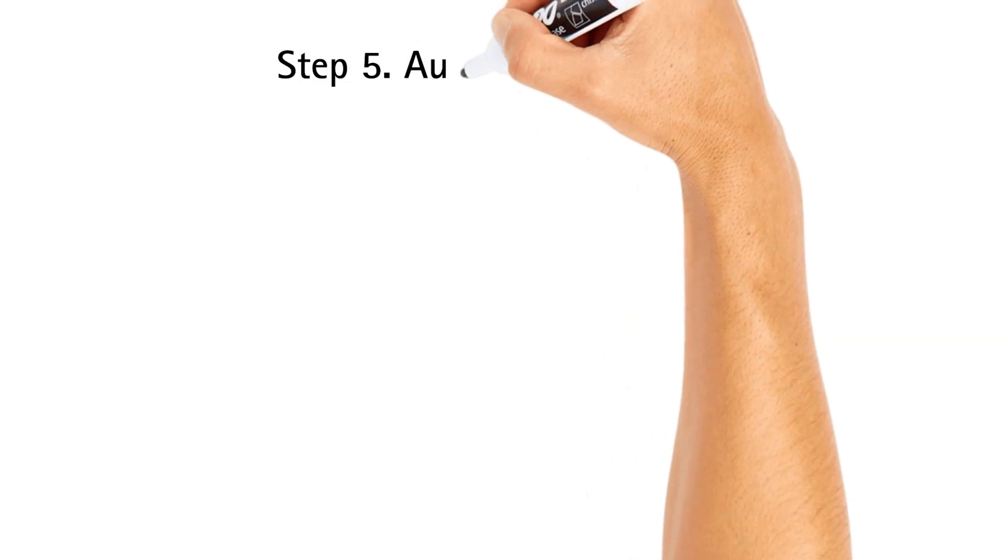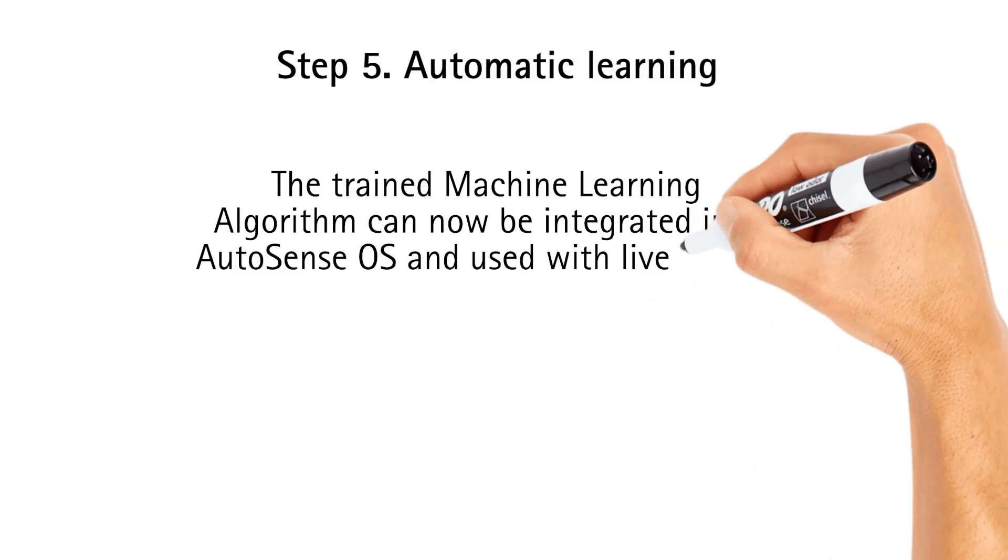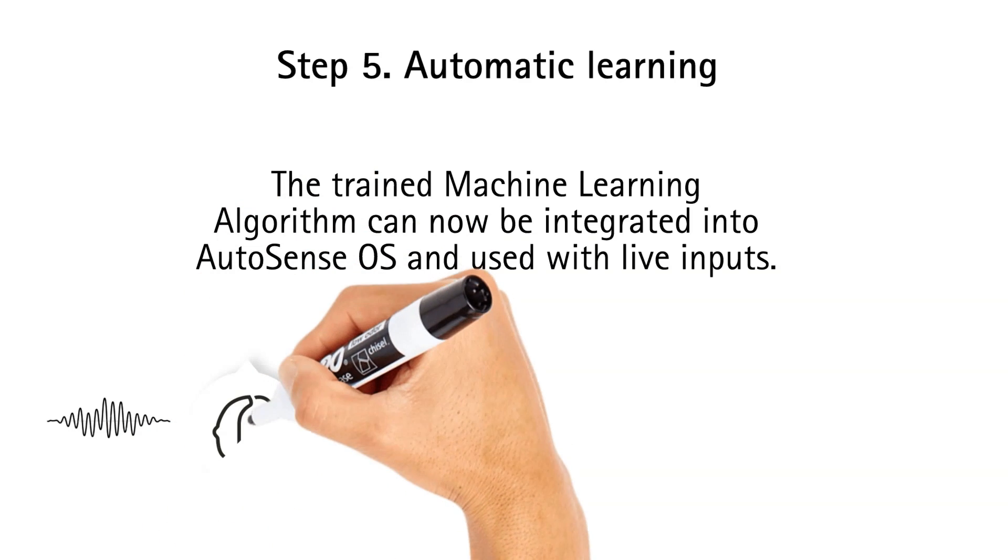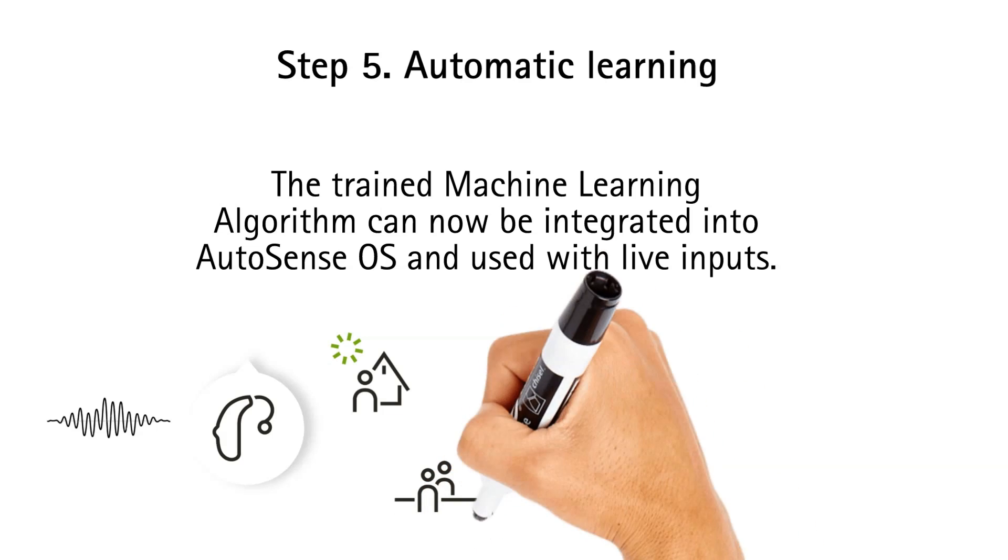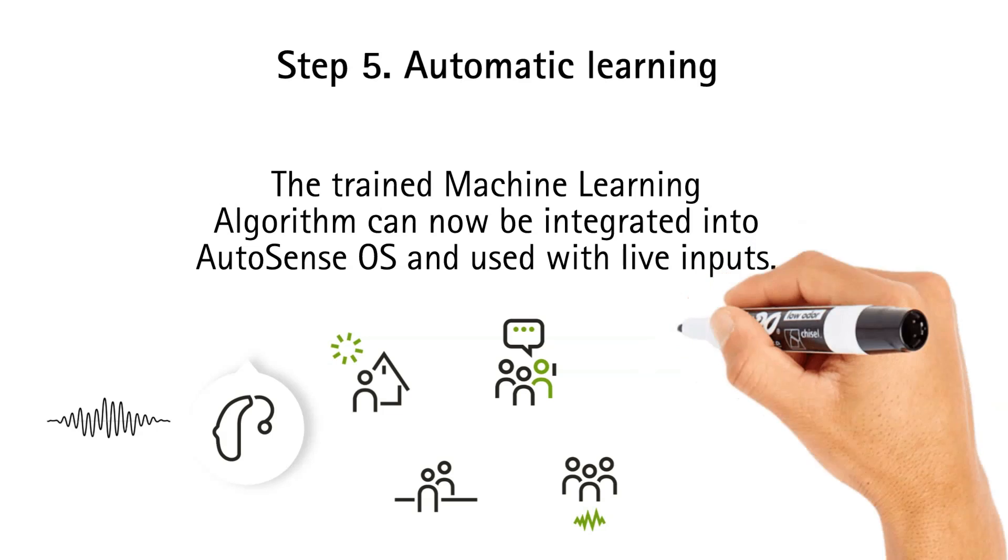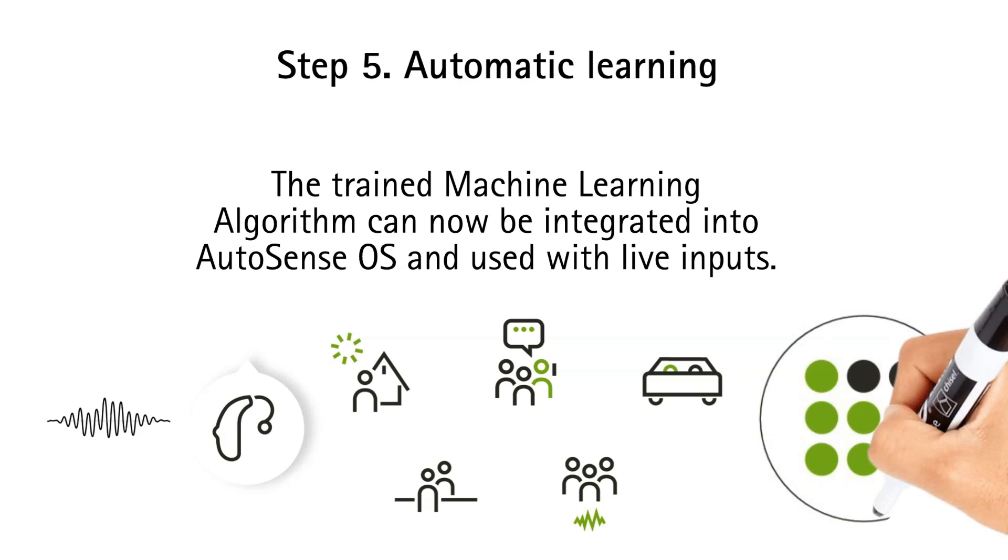Step 5 marks the phase of automatic learning. After being exposed to a vast array of sound recordings, and demonstrating consistent and precise environmental detection in controlled conditions, the machine learning algorithm is ready for integration into AutoSense OS. Now, instead of recordings, it is fed the live microphone input from a hearing aid. And it will help orchestrate choosing different possible program combinations available within AutoSense OS to ensure the hearing aid is always set to the right setting at the right time.